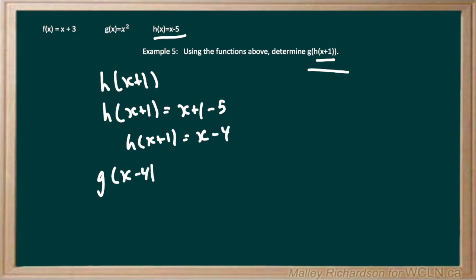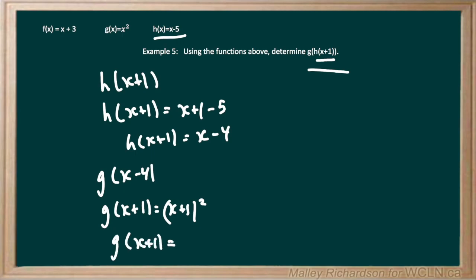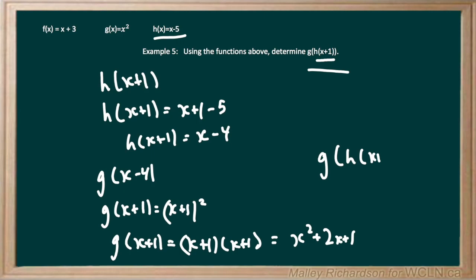For g of x minus 4, we use g of x equals x squared, replacing x with x minus 4. So g of x minus 4 equals x minus 4 all squared, which expands to x minus 4 times x minus 4. Using distribution, we get x squared minus 8x plus 16. So g of h of x plus 1 equals x squared minus 8x plus 16.